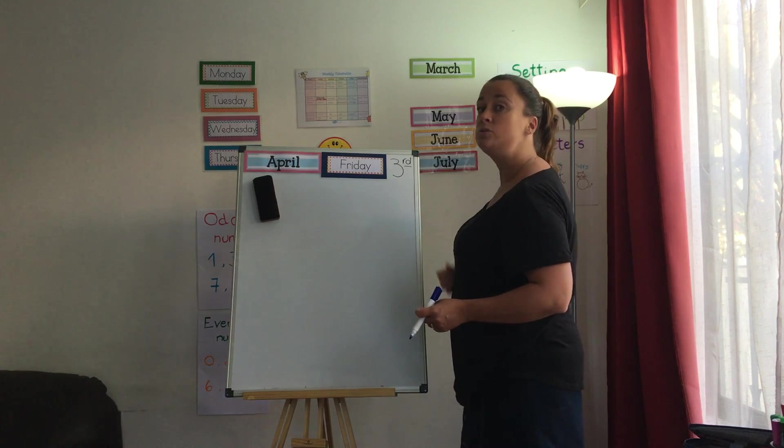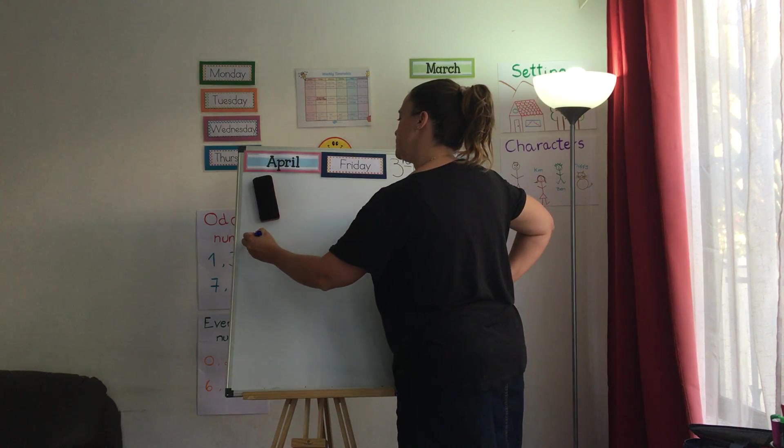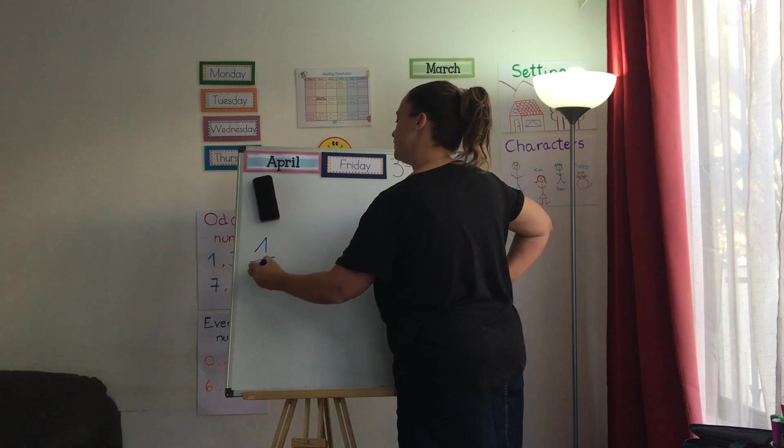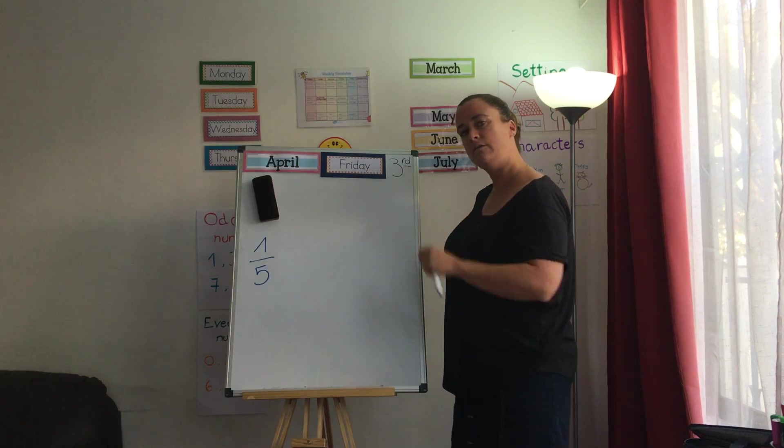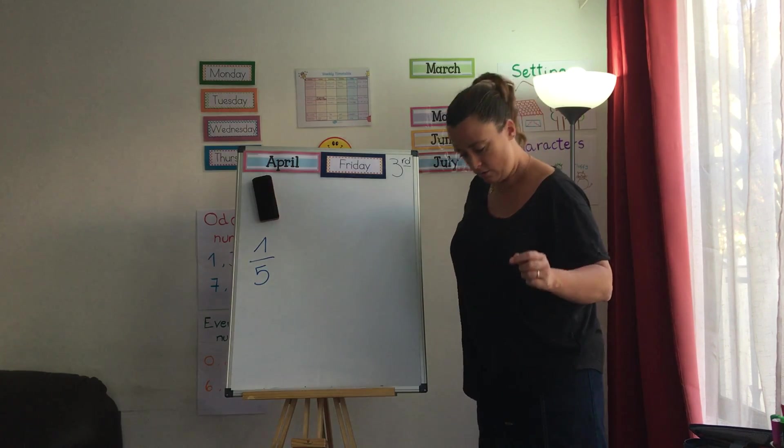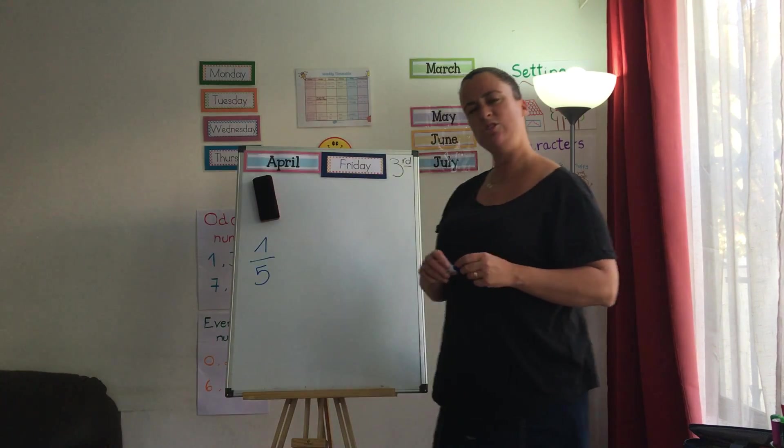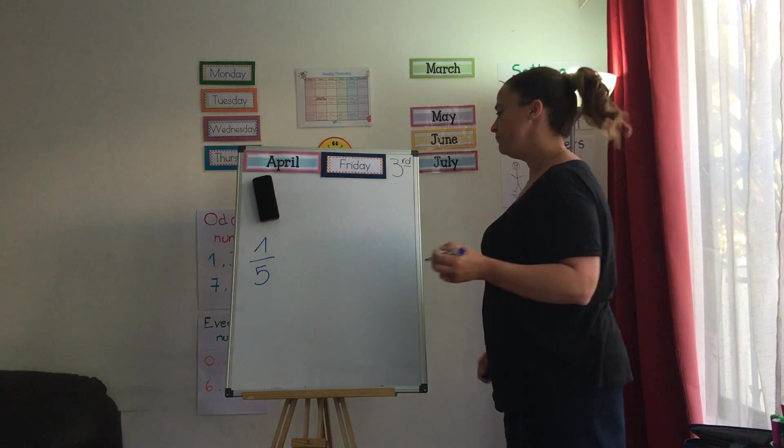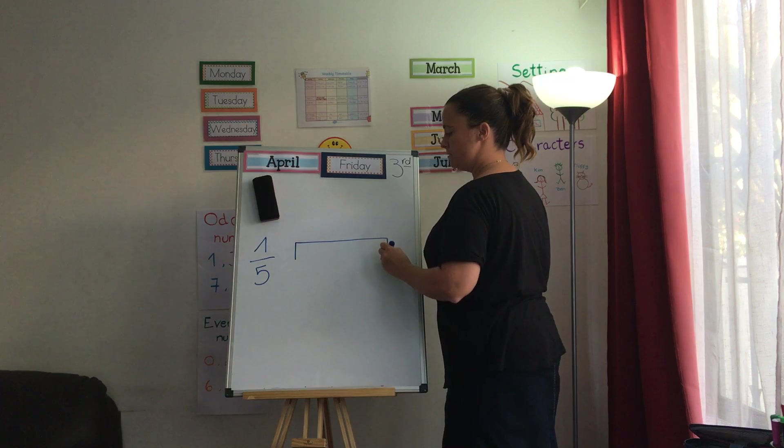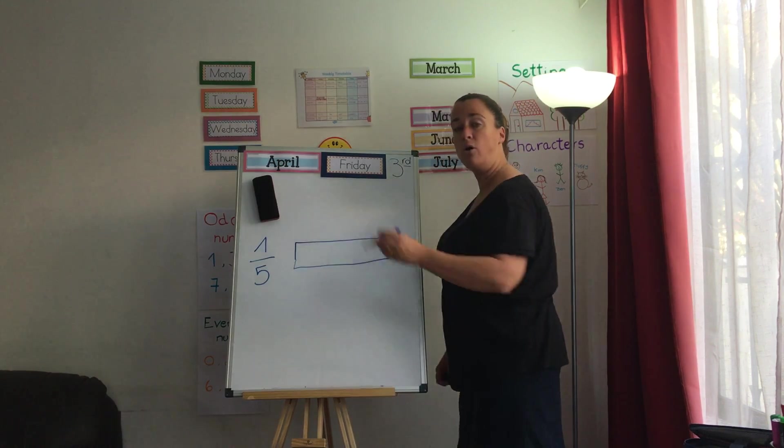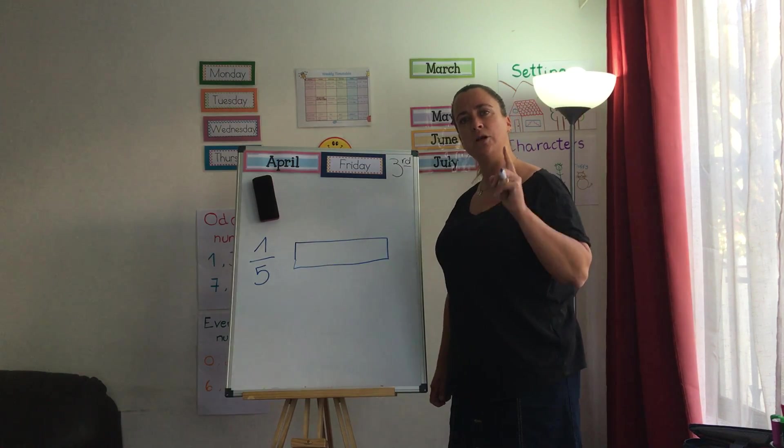We saw fractions. If I give you this, 1 fifth, and I tell you to represent 1 fifth. How do you do it? I draw my object, right? My whole. That is my whole, my complete element.